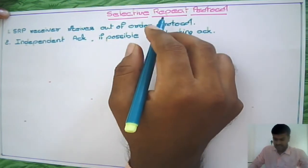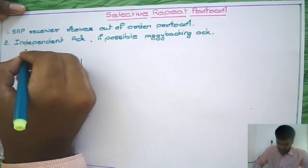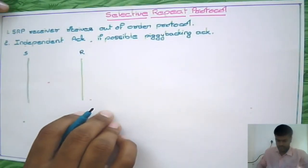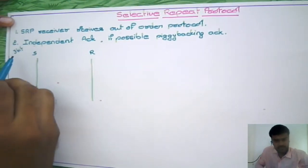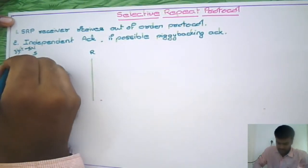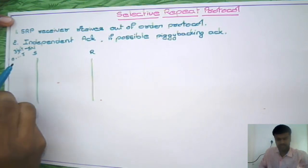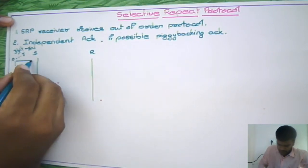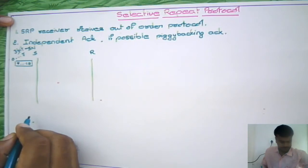Let us see what the Selective Repeat Protocol actually does. Assume this is the sender and this is the receiver. We are using 3 bits for sequence numbers, which means sequence numbers 0 to 7 — a total of 8 sequence numbers are possible, since 2 raised to 3 equals 8. So the sequence numbers are 0 to 7, and this is the window size.